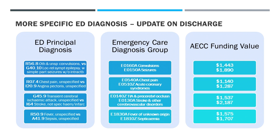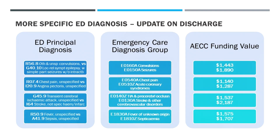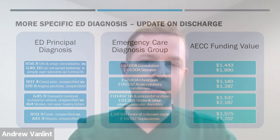We've got examples on the next slide showing the AACC estimated funding value at this point in time — a really interesting contrast between related conditions. We can see convulsions versus seizures, and there's a roughly $400 lift in a seizure compared to a convulsion. I wouldn't have realised that — I might have personally seen them as interchangeable terms, but clearly that's not actually the case. We can also see chest pain, which is rather generic, versus acute coronary syndrome, which does have a difference in funding as well.